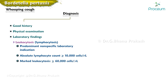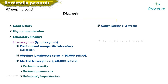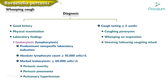Marked leukocytosis — for example, greater than 60,000 cells per microliter — has been associated with increased pertussis severity, including pertussis pneumonia and pulmonary hypertension. Clinical diagnosis is possible in patients with a cough lasting two or more weeks and at least one of the following: coughing paroxysms, whooping on inspiration, vomiting following a coughing attack, or apnea in infants.